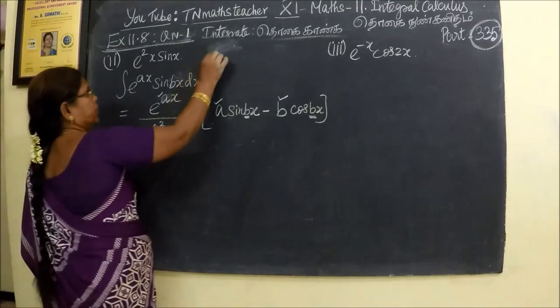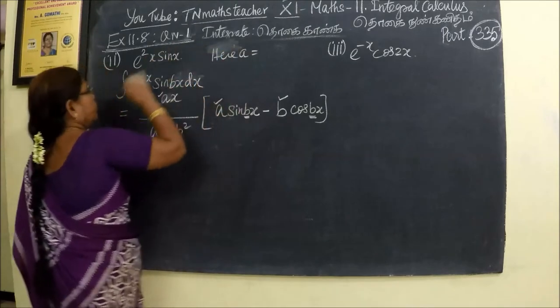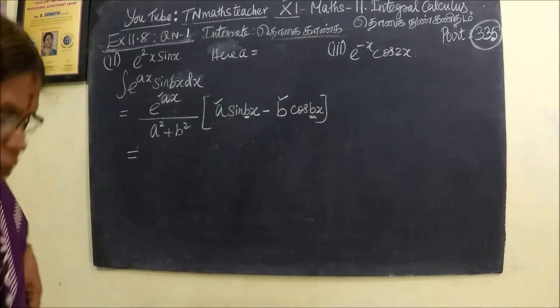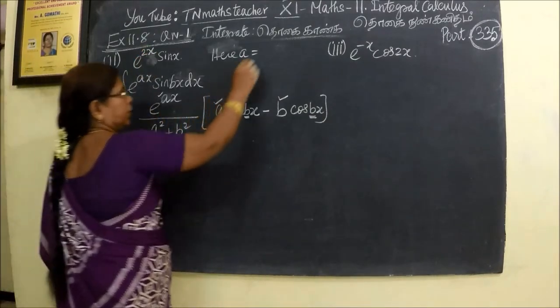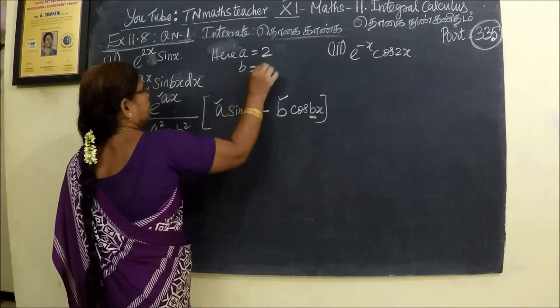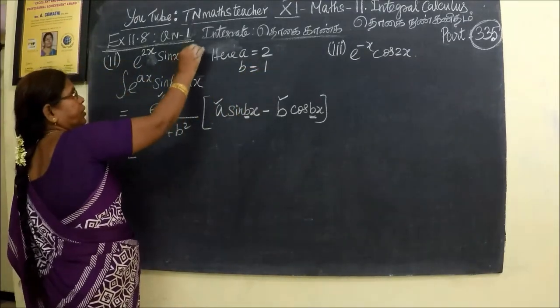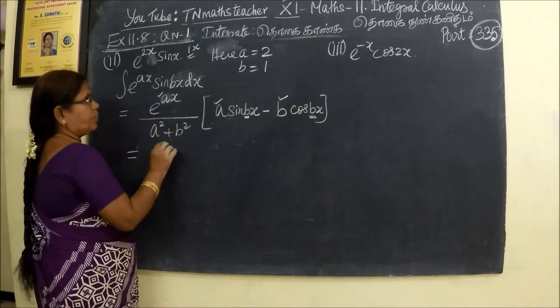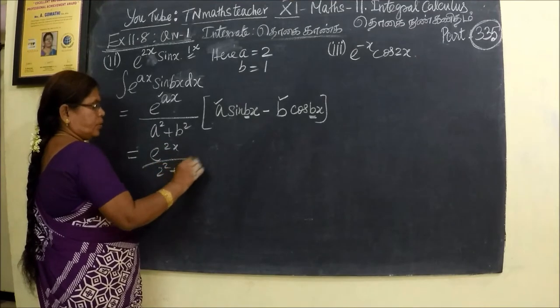So equal to a. Here a equals 2x, e power 2x. a equals 2, b equals 1. Because here no b at all, that means 1 into x. So b equals 1. So that is equal to e power 2x by 2 square plus 1 square.